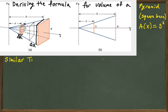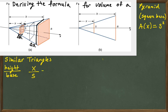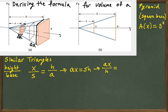We do have those similar triangles, so we're going to compare the height to the base of each one. The height of the smaller triangle is x and the base is s. The larger height is h — the height of the pyramid — and A is the length of the side of the square base. Cross multiplying gives ax equals sh, and solving for the side gives s equals ax over h. So we know A, the length of the side of the base, and h, the height of the pyramid.